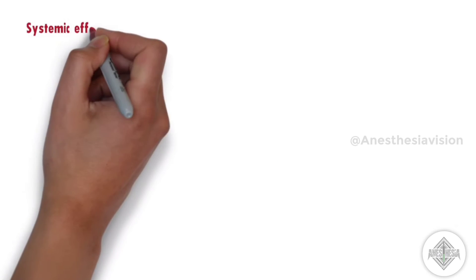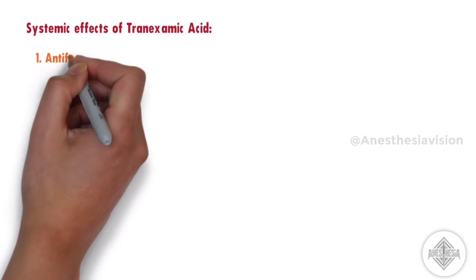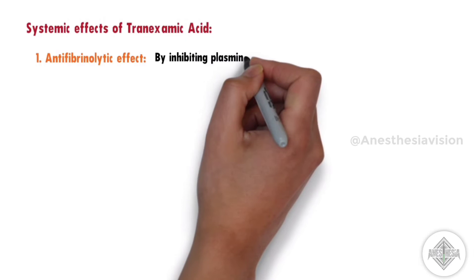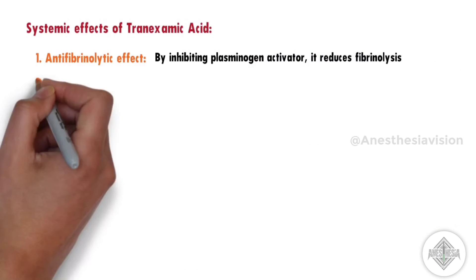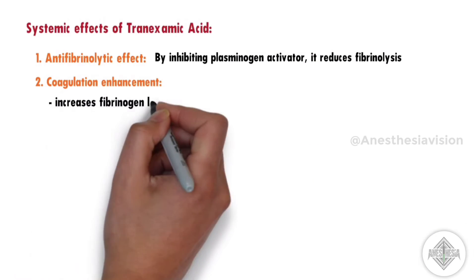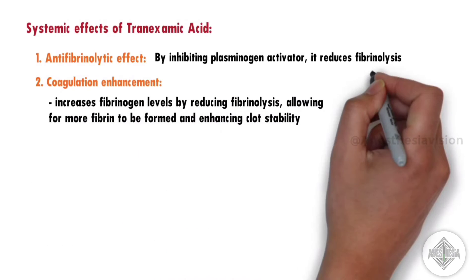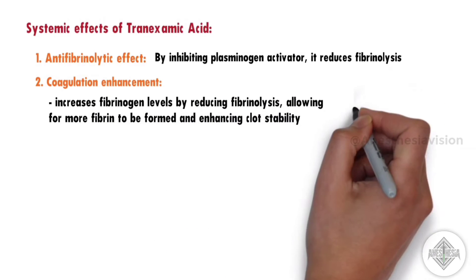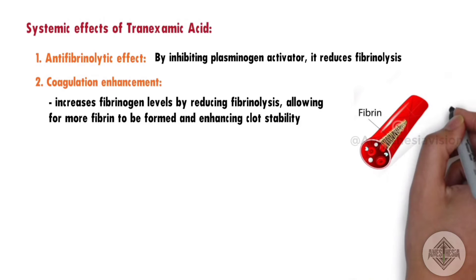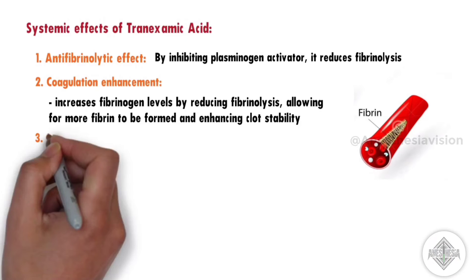Systemic effects of tranexamic acid: Anti-fibrinolytic effect — by inhibiting plasminogen activator, tranexamic acid reduces fibrinolysis and promotes clot stability. Coagulation enhancement — tranexamic acid increases fibrinogen levels by reducing fibrinolysis, allowing more fibrin to be formed and enhancing clot stability. This also leads to increased thrombin formation, further enhancing coagulation.